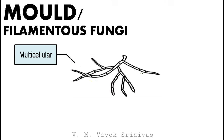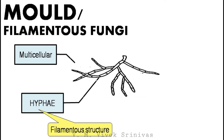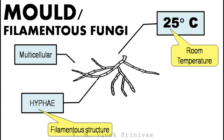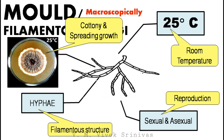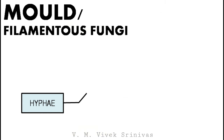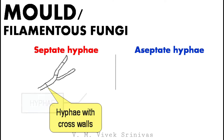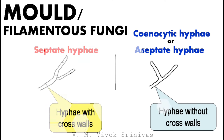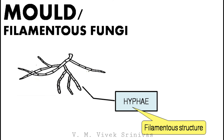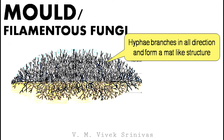Mold or filamentous fungi (also spelled 'mould') are multicellular structures that give rise to filamentous structures called hyphae. They grow well at 25°C (room temperature), and after incubation a cottony and spreading type of growth is observed. Reproduction occurs by both sexual and asexual processes. Hyphae are of two types: septate hyphae, which have cross walls in between, and aseptate hyphae (also called coenocytic hyphae), which do not have cross walls. The branching hyphae form a mat-like structure called mycelium.